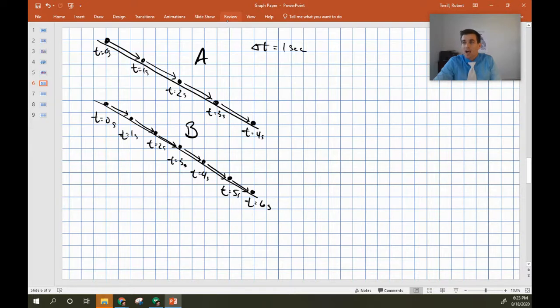In the same period of time, object A covers three-ish units, while object B only covers two-ish units along the diagonal. That means that after, say, two seconds, and we can see it right here, object A is here, object B is still back here. And as they go down the hill, that will only increase the magnitude of difference between their positions.